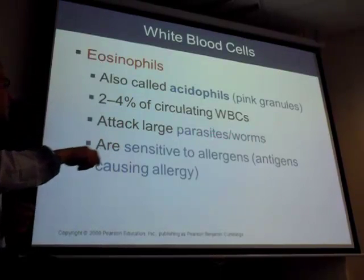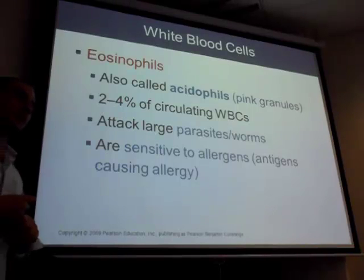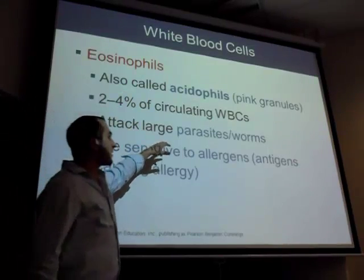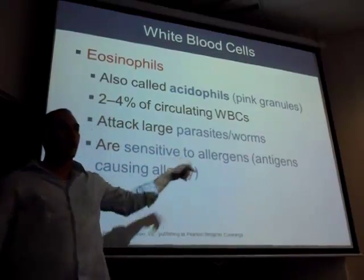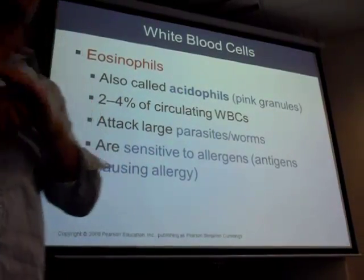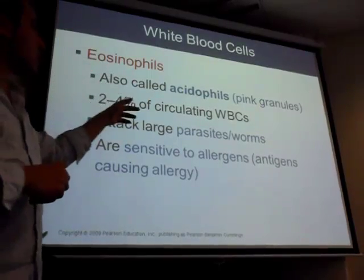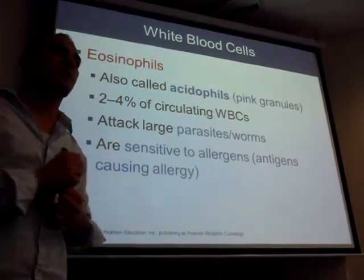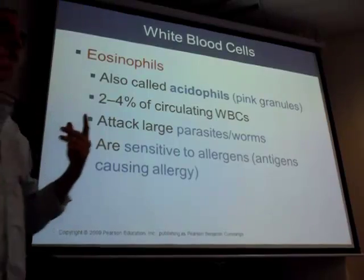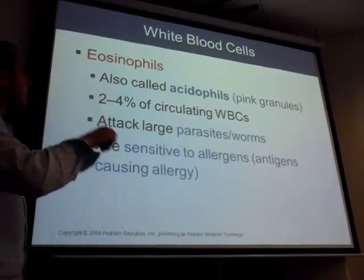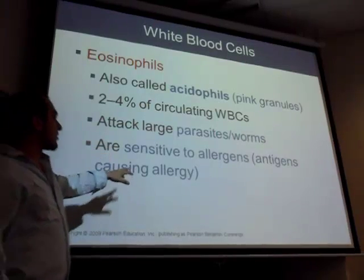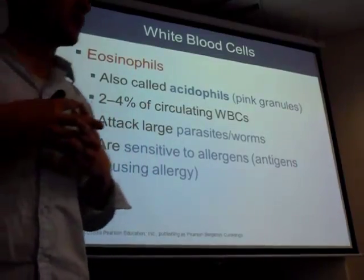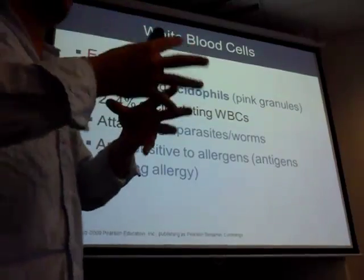Is this a granulocyte or agranulocyte? Since the name ends in '-phil,' it's filled with granules — a granulocyte. Their enzymes attack parasites and worms. Worms are the largest of the pathogens — they can swim through intestines and blood vessels. Eosinophils also release substances that cause allergies, called allergens, or antigens that cause allergic reactions.